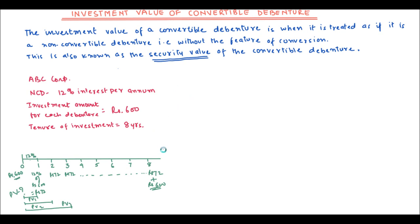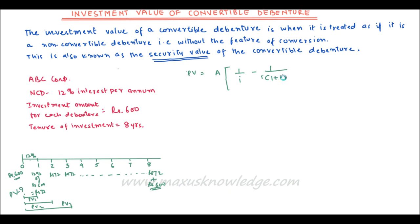For simplicity I will break this into two parts. In the first part I will treat the interest as an annuity, since every year I am getting Rs. 72 for 8 years. The formula for the present value of an annuity is: PV = A × [1/i − 1/(i × (1 + i)^N)], where A is the annuity amount, i is the interest rate, and N is the tenure.